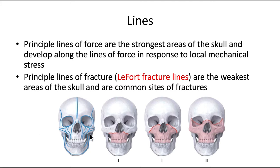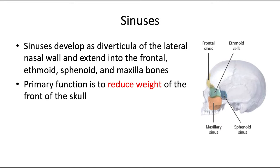Another notoriously weak area of the skull is called the pterion — P-T-E-R-I-O-N. The pterion represents a region in the lateral skull where the frontal, parietal, sphenoid, and temporal bones articulate. It is actually the weakest area of the calvaria.